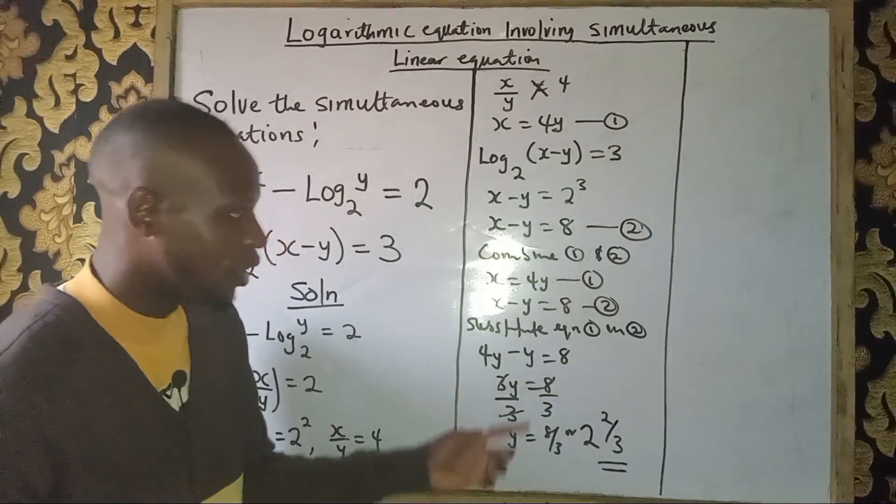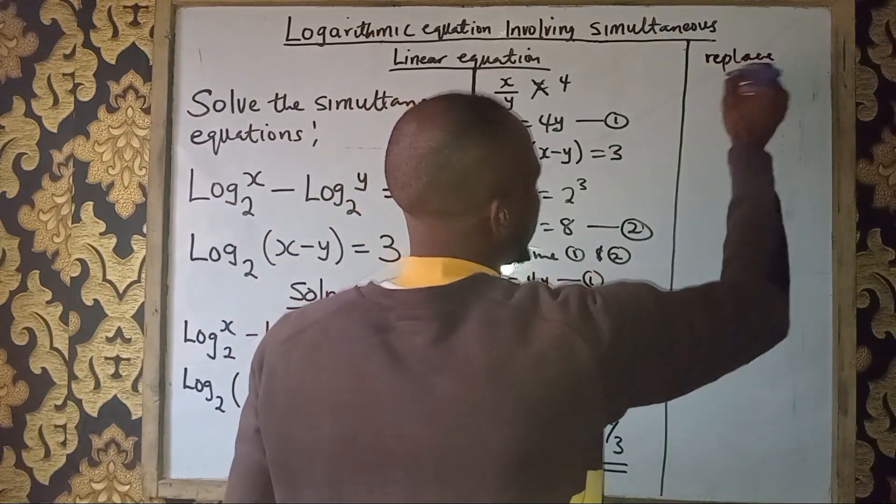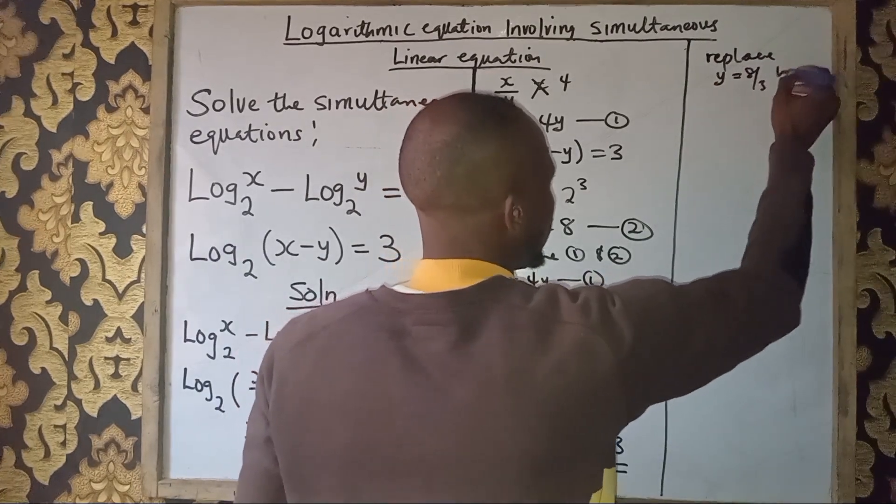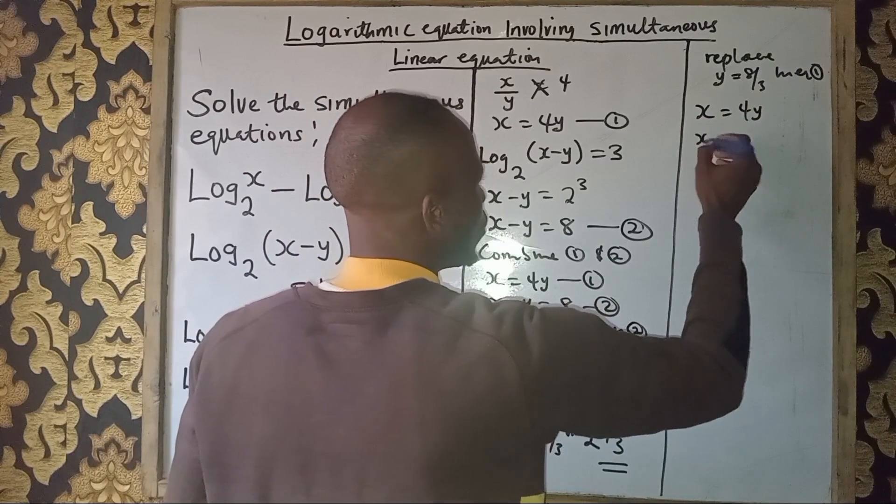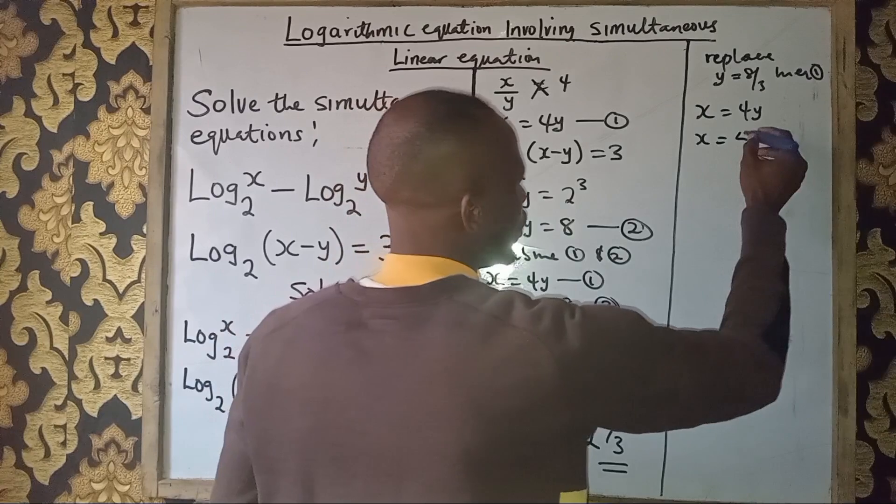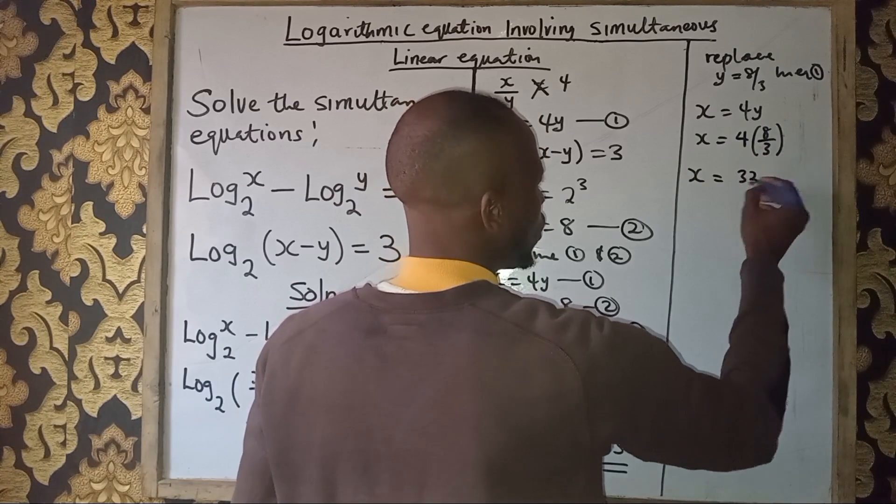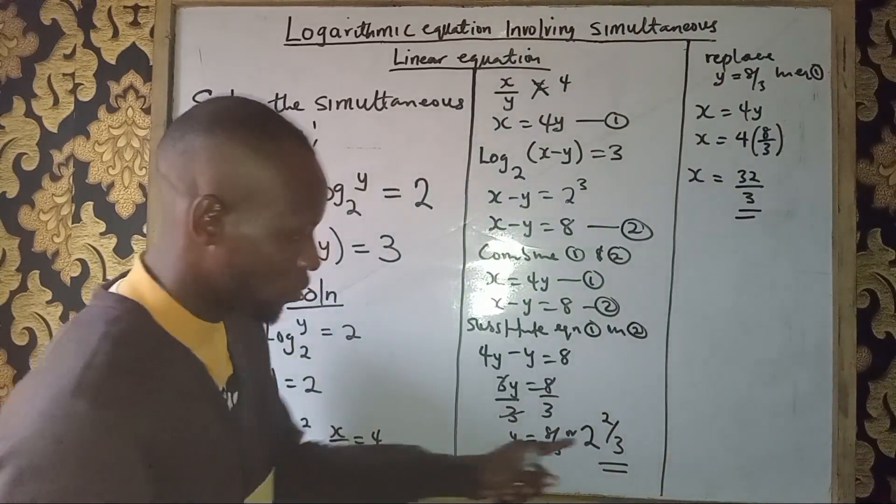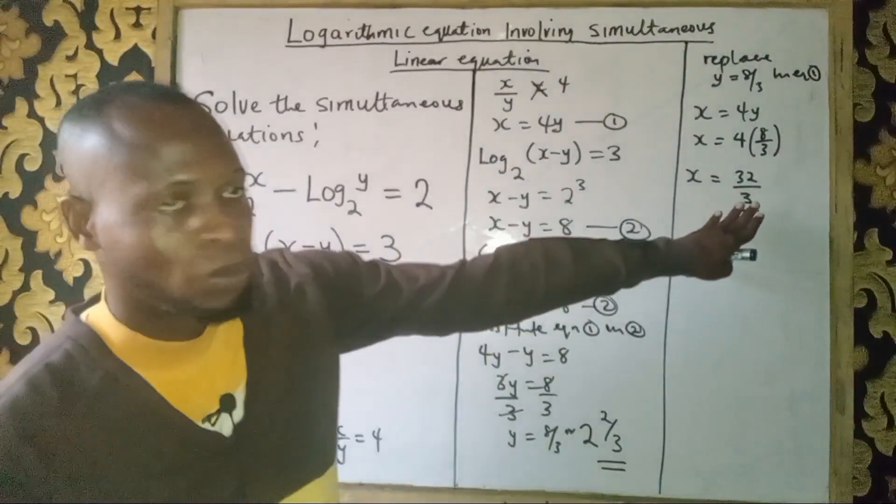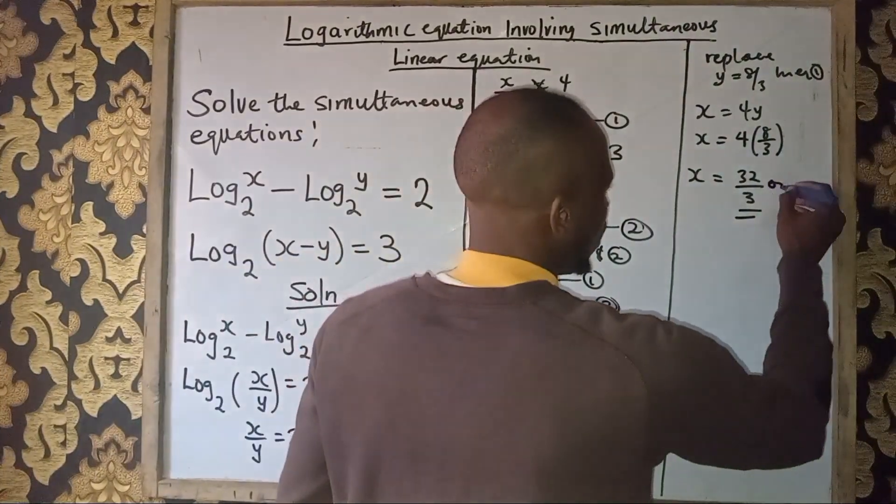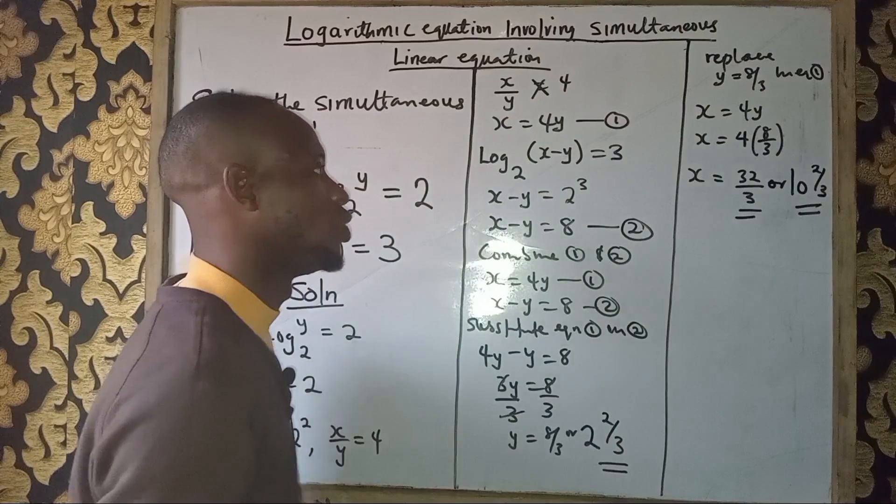We have the value of y equals 8/3. Now replace that value of y back into equation 1 to get the value of x. Equation 1: x equals 4y. Anywhere we see y, we put 8/3. This becomes 4 times (8/3). When you multiply, 4 times 8 gives 32/3. So the answer is 32/3, or in mixed form, 10 and 2/3, or even in decimal.